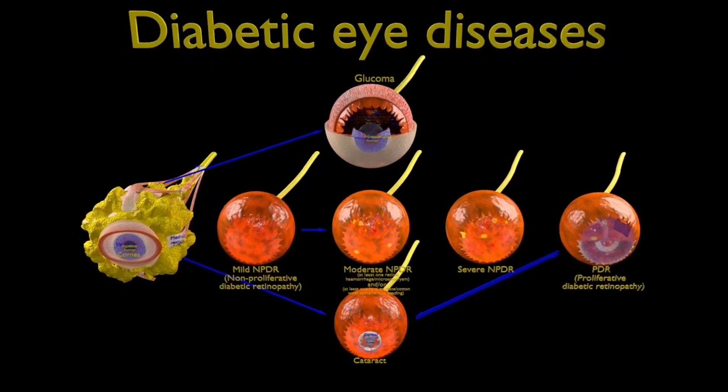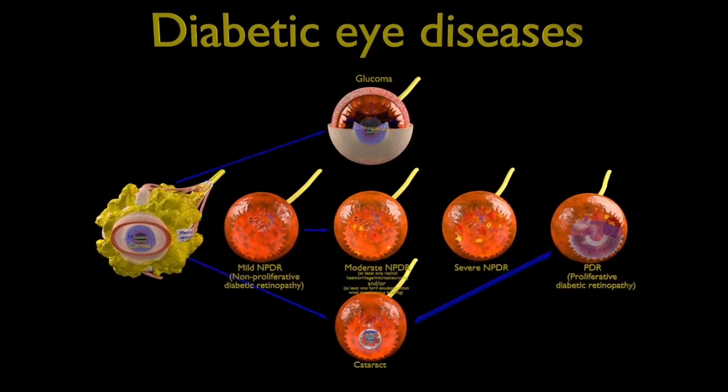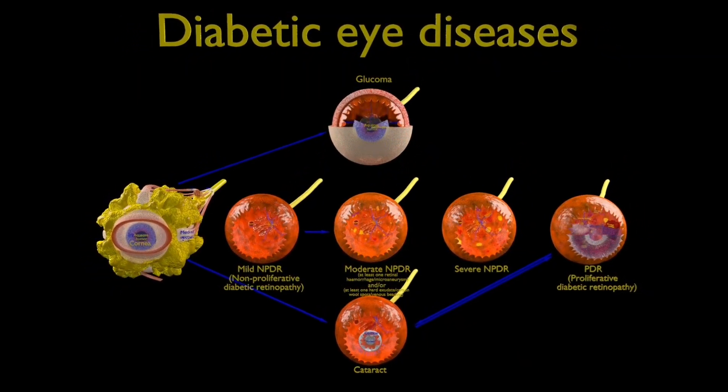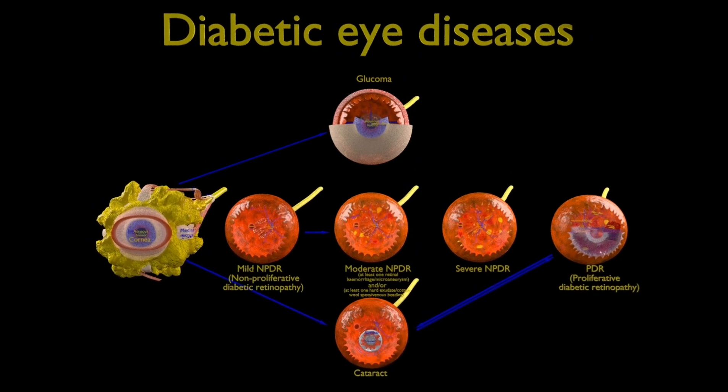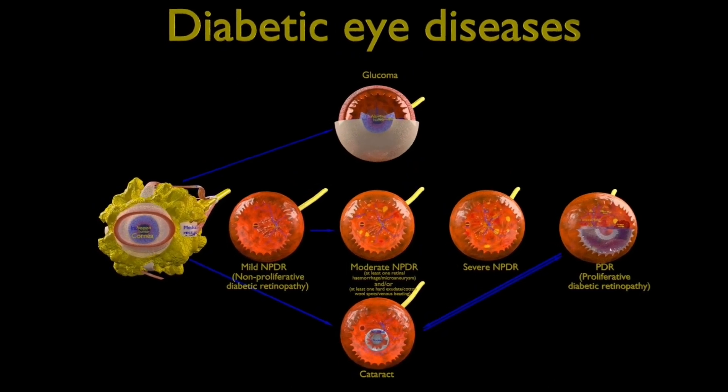This video demonstrates different diabetic eye lesions. For comparison, a normal eye is initially described followed by the diseases.